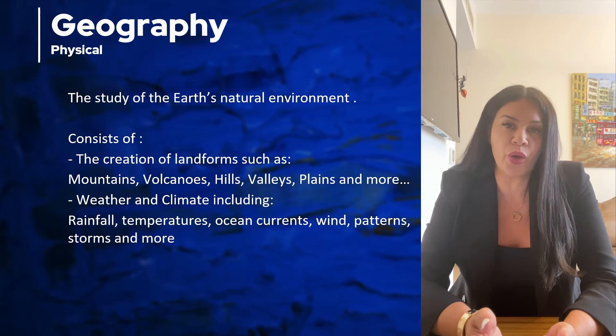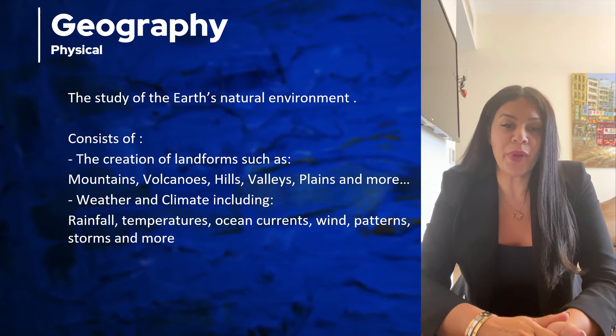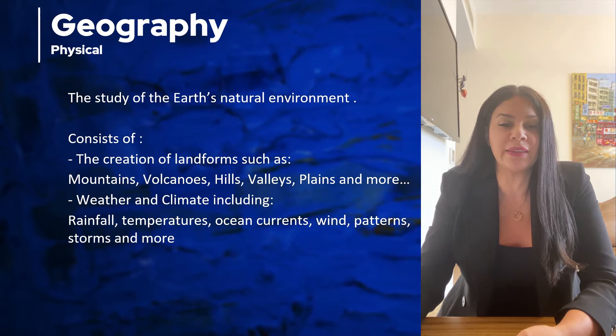The biomes of the world are tropical rainforest, temperate forest, desert, tundra, taiga, grassland, and savannah.